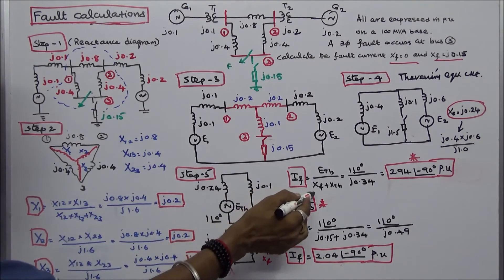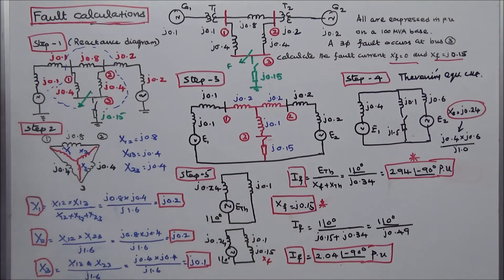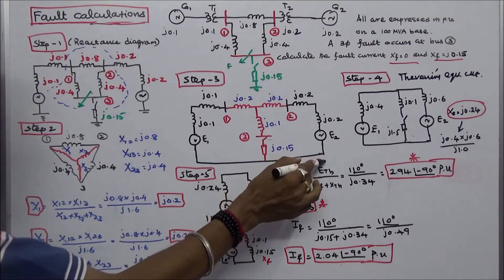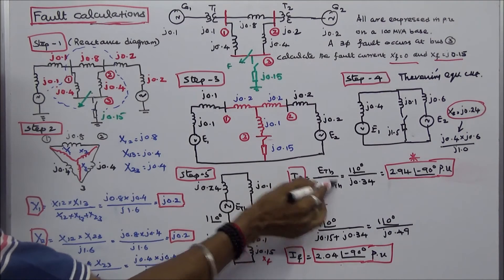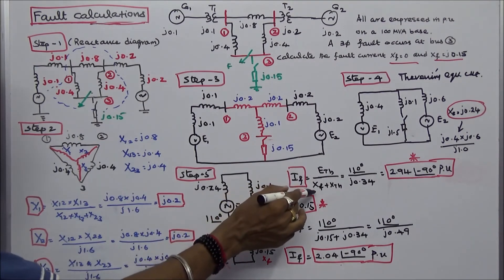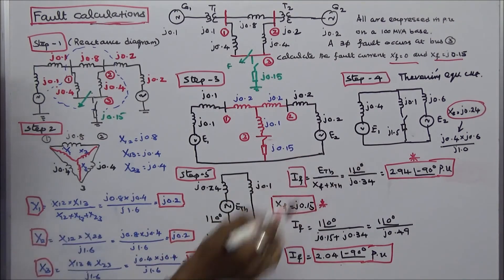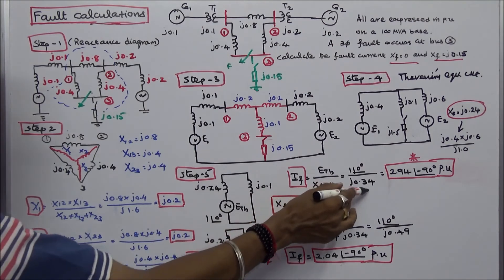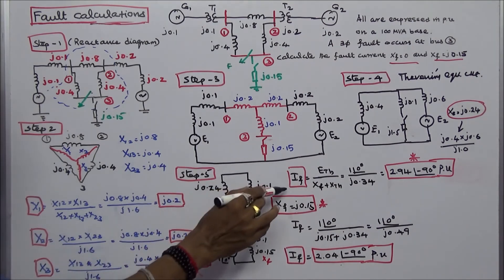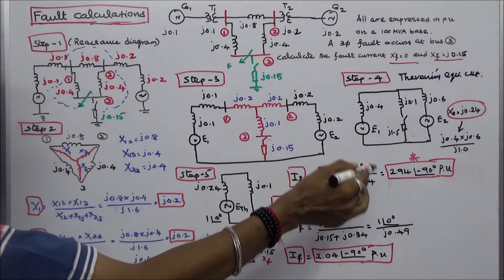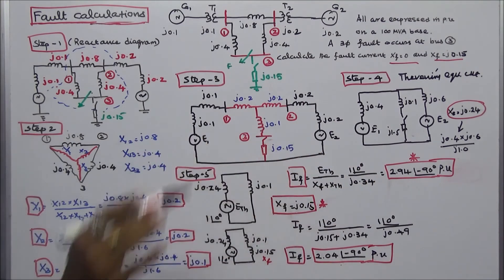Because Xf is equal to 0, we can easily calculate the fault current. If equals E-Thevenin divided by (Xf + X-Thevenin). With Xf equal to 0 and E-Thevenin equal to 1 angle 0 and X-Thevenin equal to J.34, the fault current is 2.94 angle minus 90 degrees in per unit.